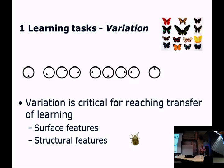Learning tasks must also differ from each other on structural features. We need variation on both surface and structural features in order to support inductive learning, yielding cognitive schemas that make it possible to apply the things we have learned to new situations — that's transfer of learning.